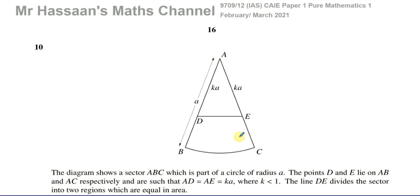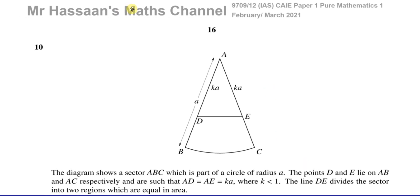Welcome back, this is Mr. Hassan's Math Channel. I'm now answering question number 10 from the February-March 2021 International A-Level Cambridge CAIE paper, paper 1, variant 2, 9709 syllabus. This question is about circular measure.